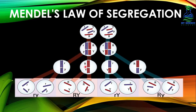For example, capital R gets separate from small r, and capital Y gets separate from small y. Every gamete receives only one allele from the pair. In this way, gametes with variant alleles for a trait can be formed.